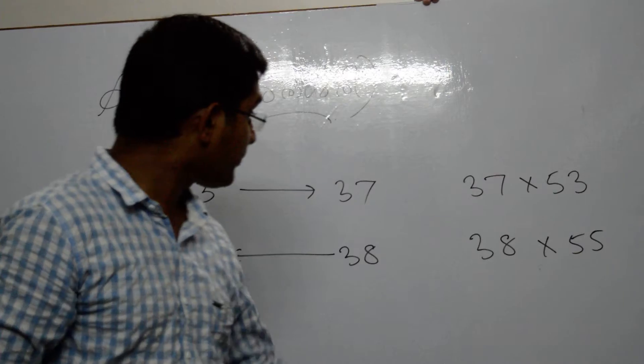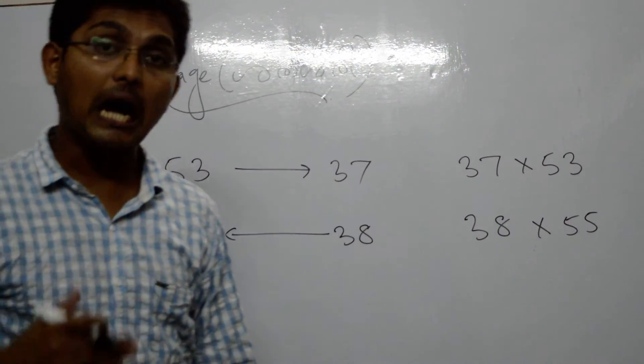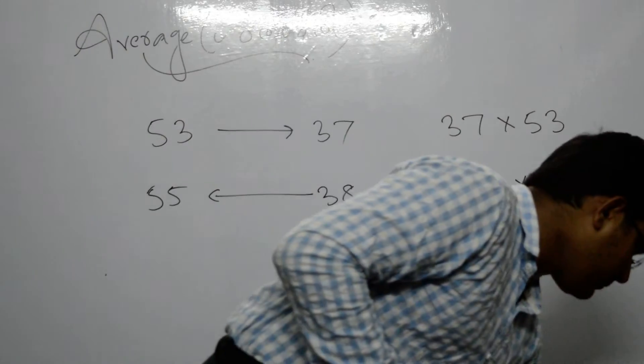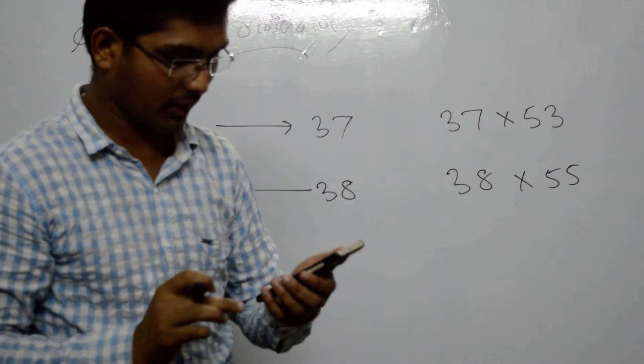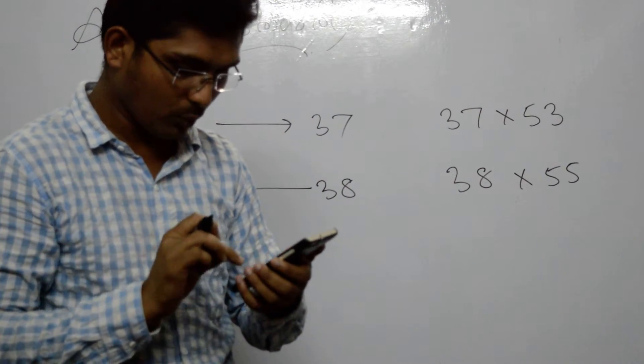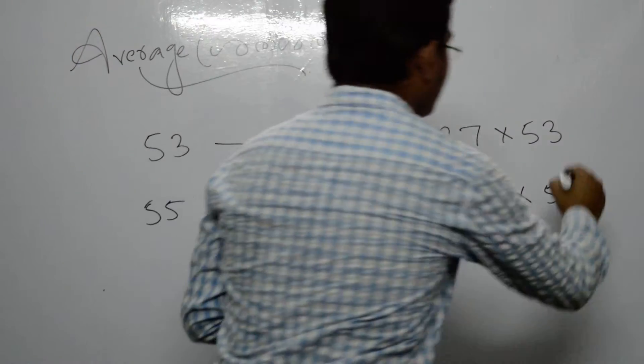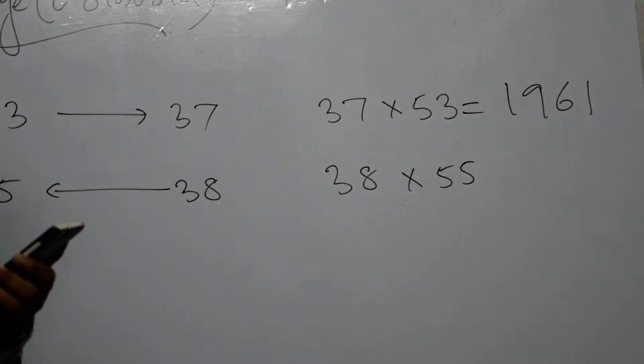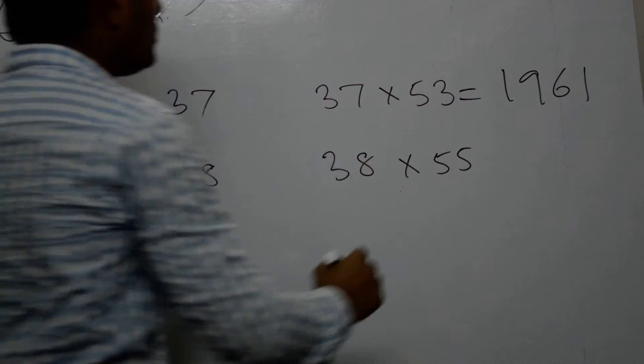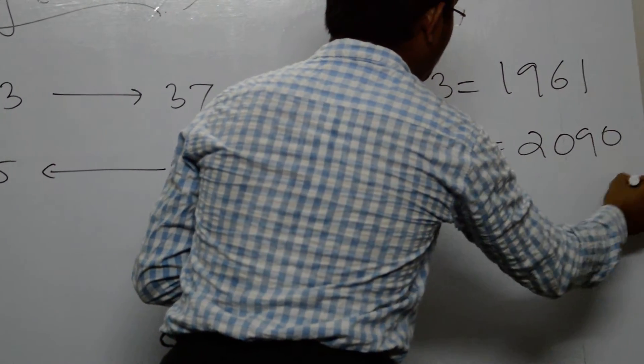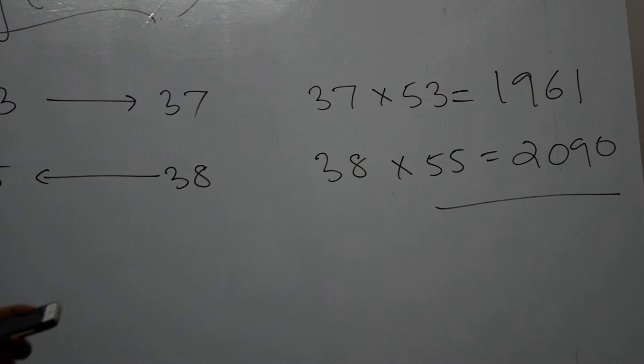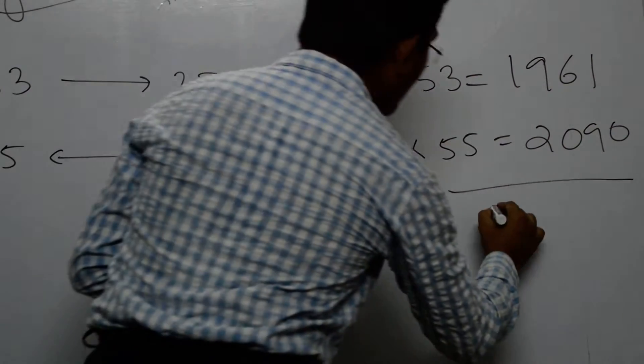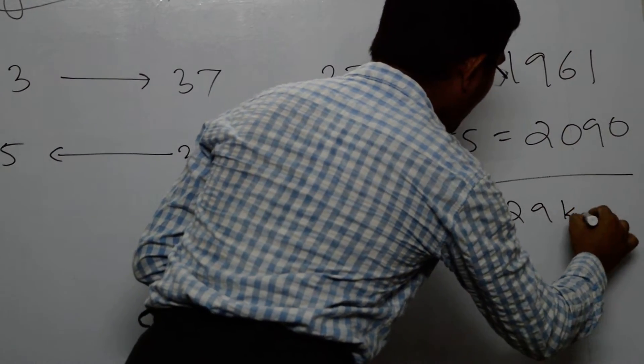Let's calculate: 37 students at 53 kg average, and 38 students at 55 kg average. So 37 times 53 equals 1961. And 38 times 55 equals 2090. The difference is 129.